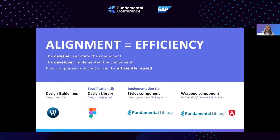The next step is that I want this annotated component to be aligned with the control libraries as well — the development library. At that point I want everything to be aligned so I have efficiency in my design work, not only for designers to be efficient but for developers to implement without questions. They know that we are talking about that one specific component. So efficiency is the keyword of this presentation when working with libraries.